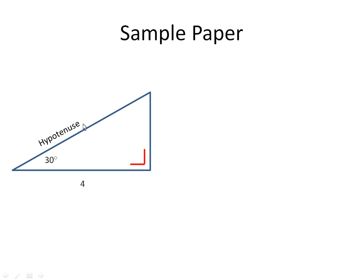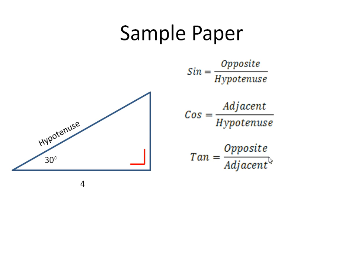This here must be the hypotenuse. We also know the three rules: sine of an angle equals opposite over hypotenuse, cosine is adjacent over hypotenuse, and tan is opposite over adjacent.